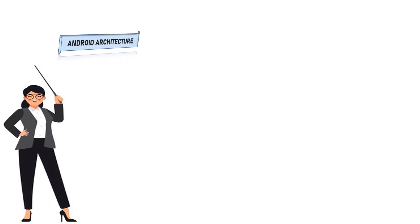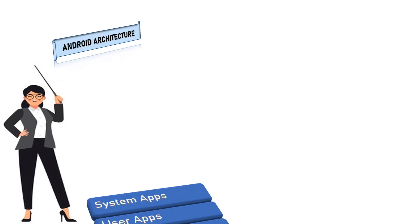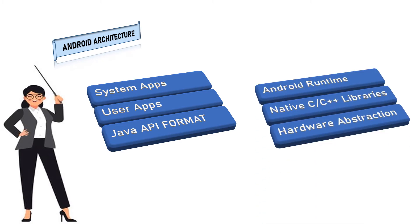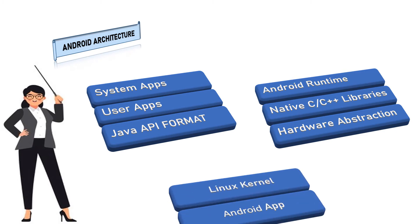Now let's talk about Android architecture. Android architecture generally consists of: system apps, user apps, Java API framework, Android runtime, native C/C++ libraries, hardware abstraction layer, Linux kernel, and Android app.